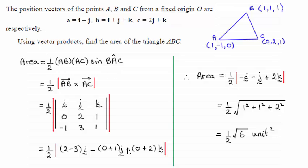So you can see the method that I've used here and the answer turns out to be a half root 6. I put units squared purely because it's an area. Now I'll explain the method that I've used and other alternative methods.